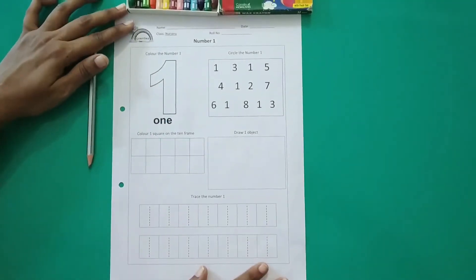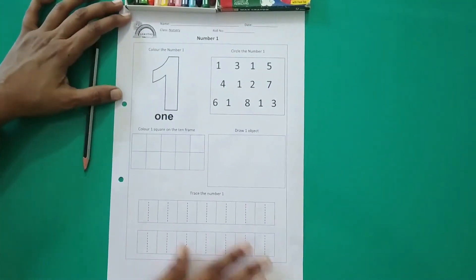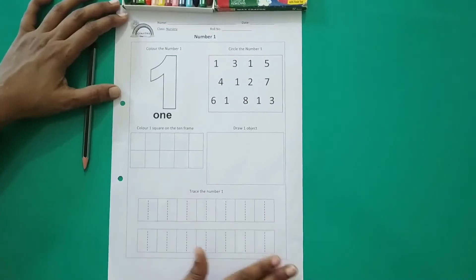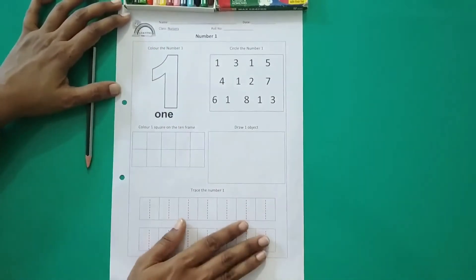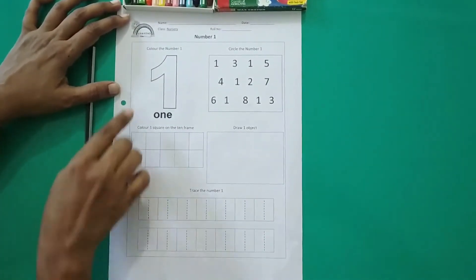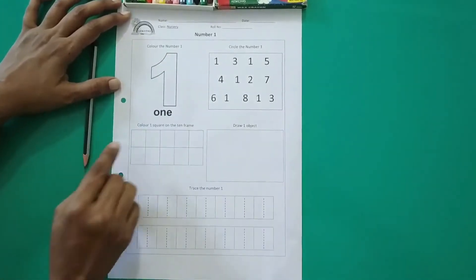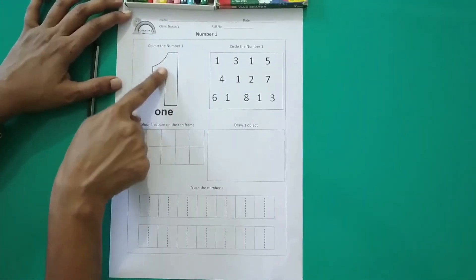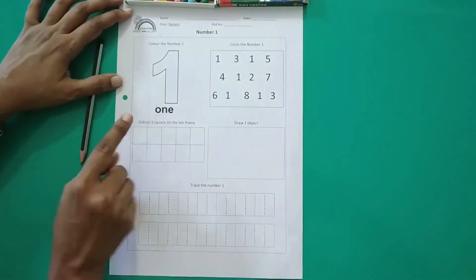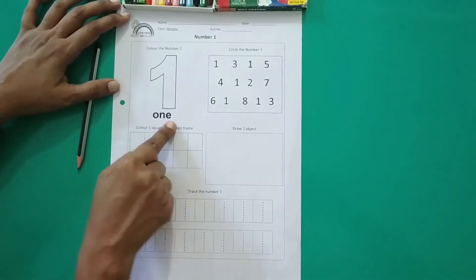So there are many activities on this page. I will explain how you have to do it. So what is the first activity? Color the number 1. You have to color the picture of 1 and this is the spelling of 1.